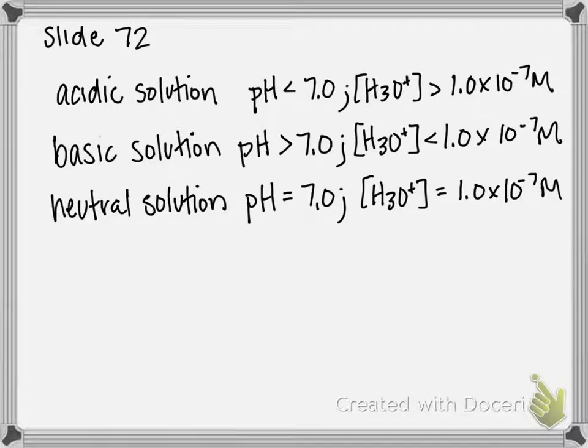So pH is a scale from 0 to 14. Anything that is below 7, pH below 7, is considered an acidic solution, which also corresponds to having a hydronium or H+ concentration greater than 1×10^-7 molar.